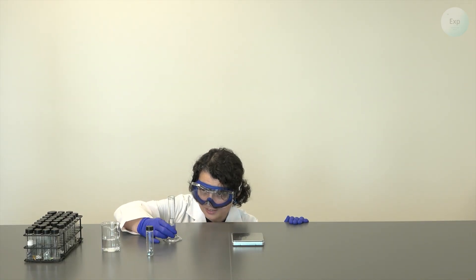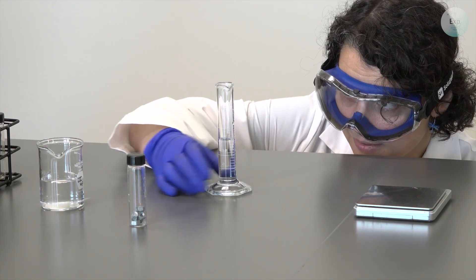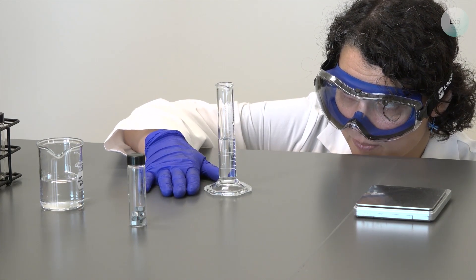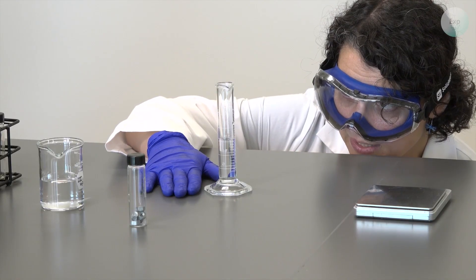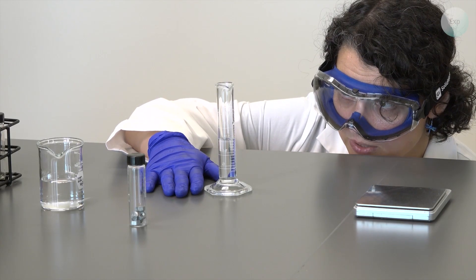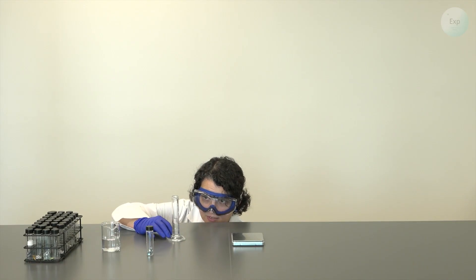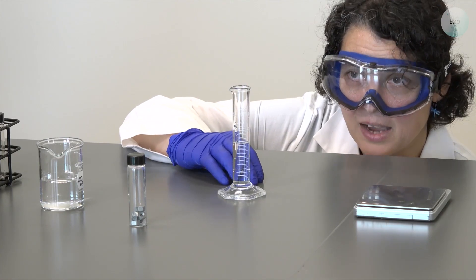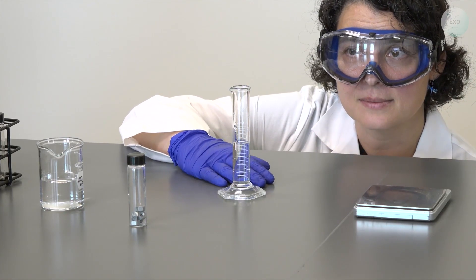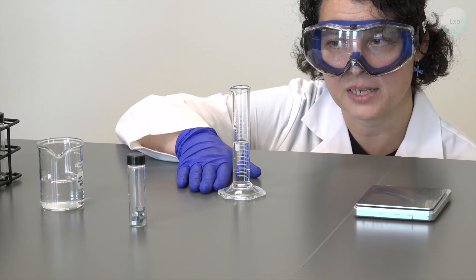And so we're going to get ourselves to eye level, find the meniscus of our water and then record its volume. My volume is between 15 and 16 milliliters. That means I am going to use a number to estimate which value it's closer to, which in this case it is closer to 16. I will estimate that number to be 8. So 15.8 milliliters of water by itself.